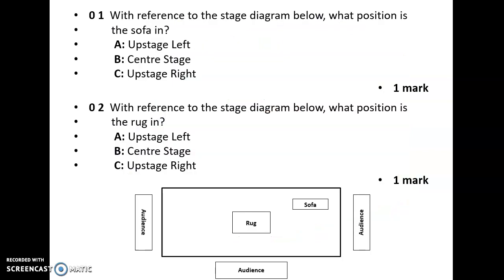Okay, a little bit of a test now. Question one — and this is exactly how you get it in the exam, by the way, so in section A this is how the questions will be set up. With reference to the stage diagram below, what is the position that the sofa is in? Is it A: upstage left, B: center stage, or C: upstage right? The answer is A — upstage left.